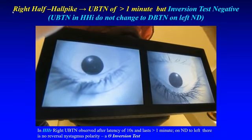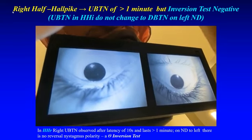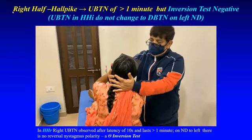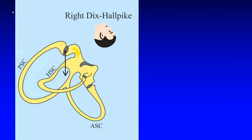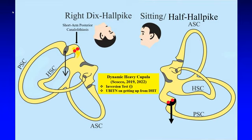This is a type of cupulolithiasis which is non-adherent — the debris falls away during inversion, away from the posterior cupula. In the right Dix-Hallpike position, the otocondrial debris is shown in the short arm of the posterior semicircular canal. As the patient is positioned from right Dix-Hallpike to the upright sitting, or positioned to the half-Alpike from upright sitting, the otoconia fall on the articular side of the posterior cupula making it heavy. This dynamic heavy cupula generates an upbeating ipsi-torsional nystagmus on getting up; the inversion test is negative as seen in the previous video.